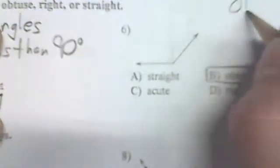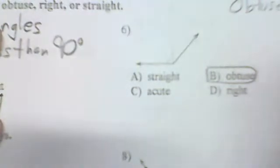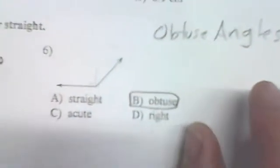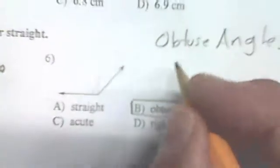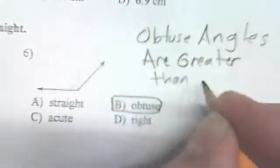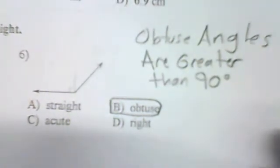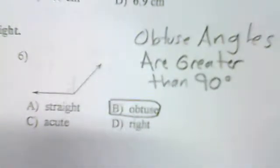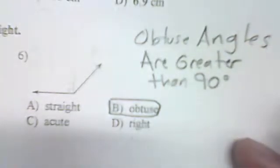Looking at this other angle, it's definitely not less than 90 degrees — we can see a right angle inside of it, so it's bigger than 90 degrees, which means it's obtuse. Obtuse angles are greater than 90 degrees. On this test, if it's obtuse it will be obvious — it won't be something very close to 90. You should be able to eyeball it.